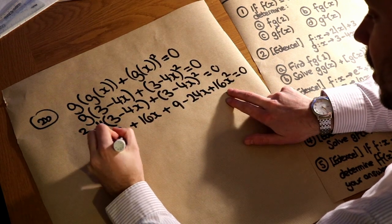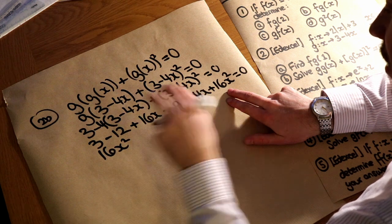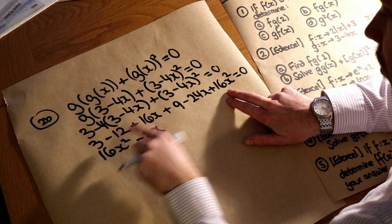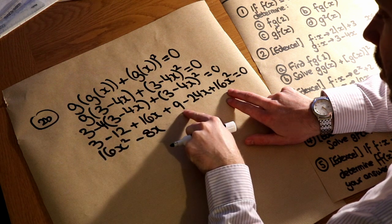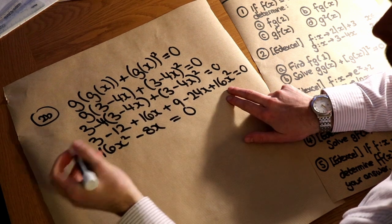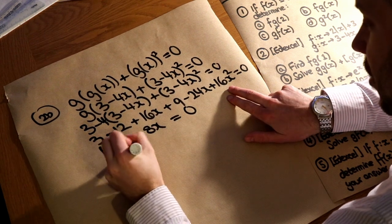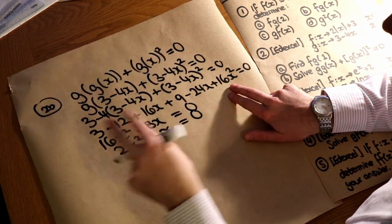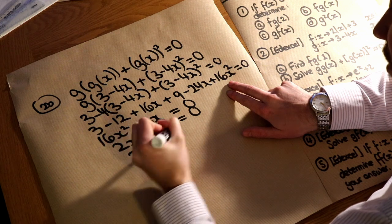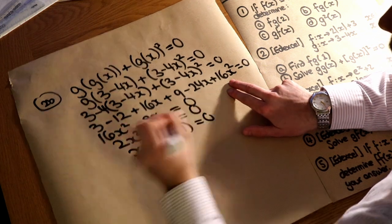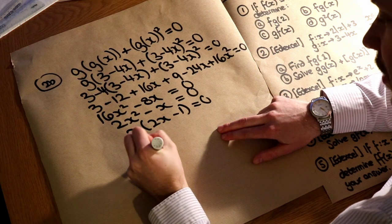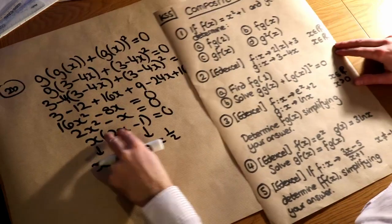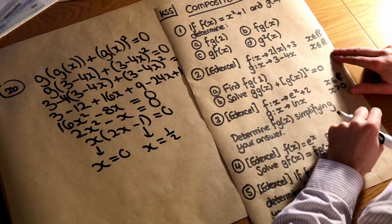Simplifying, we have 16x² − 8x = 0. Dividing both sides by 8 gives 2x² − x = 0. Factorising out x: x(2x − 1) = 0. This gives two solutions: x = 0 or x = ½.